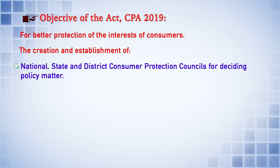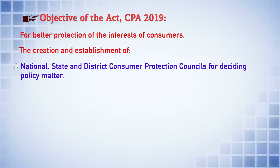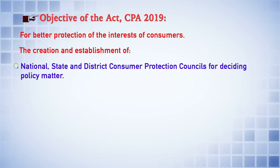This is a three-tier structure: the National Consumer Protection Council at the national level, the State Consumer Protection Council at the state level, and the District Consumer Protection Council at the district level. Their primary job is to decide on policy matters related to the protection of the interest of consumers.